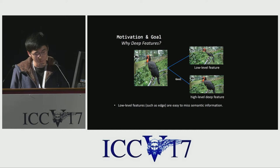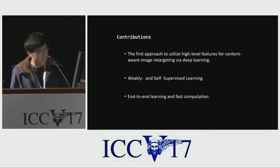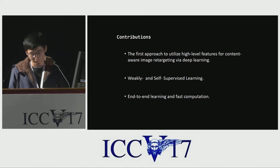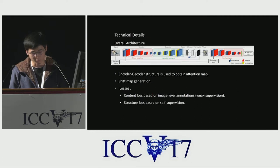In this work, we introduce a high-level feature-based image retargeting method via deep convolutional neural network. This work is the first approach to utilize high-level features for content-aware deep image retargeting. Also, it requires only weak supervision and can be trained end-to-end.